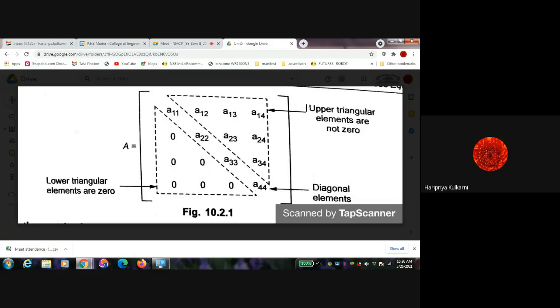This is equal to some constant, so we can get directly the value of a44. If I put this value here, I will get a33, then a22, then a11. Likewise I can solve it for x, y, or p, q, r, s. This is for four equations I am saying.